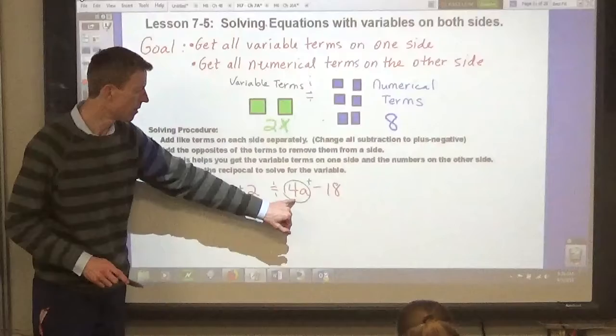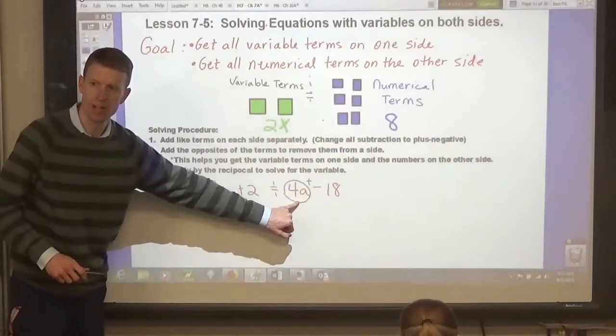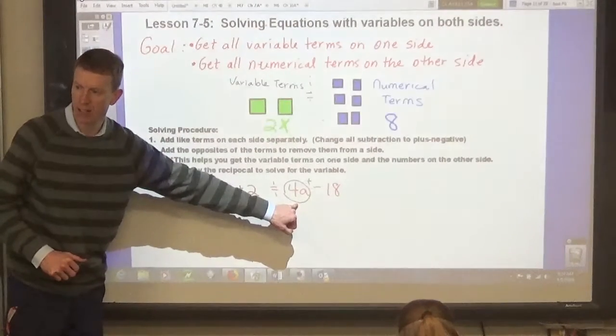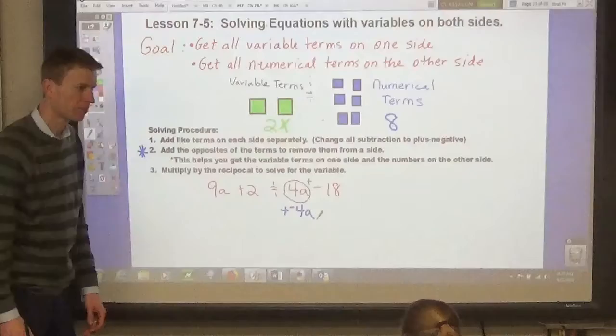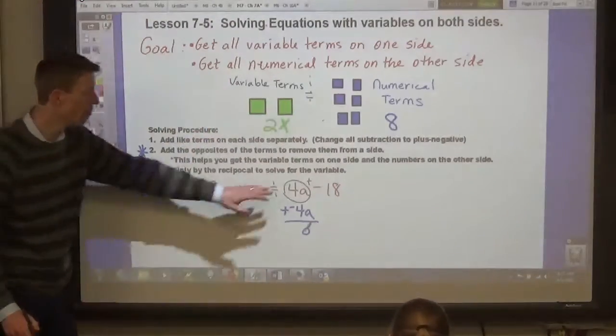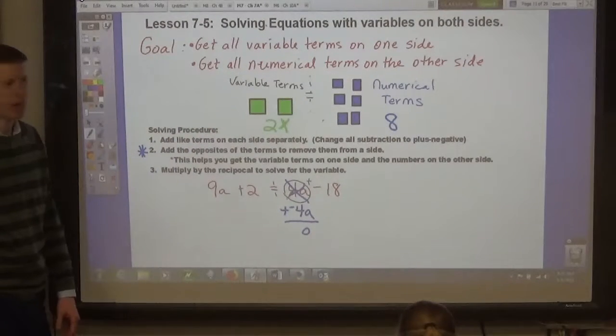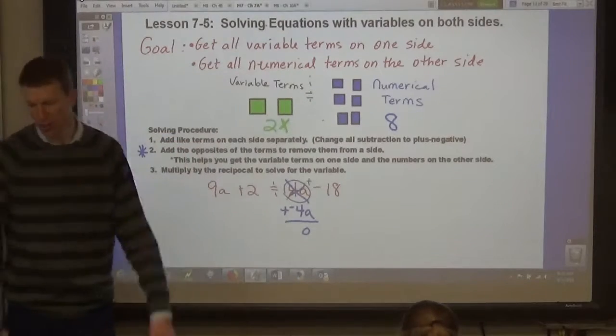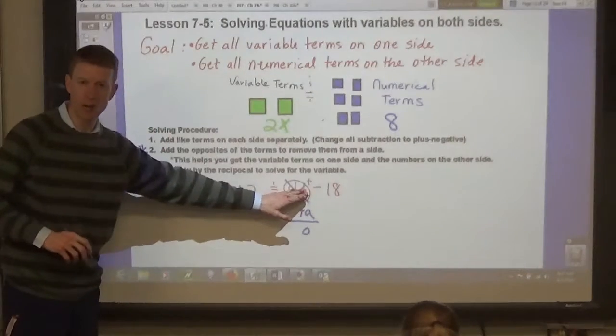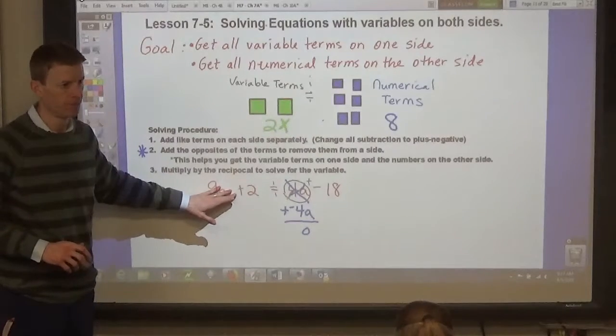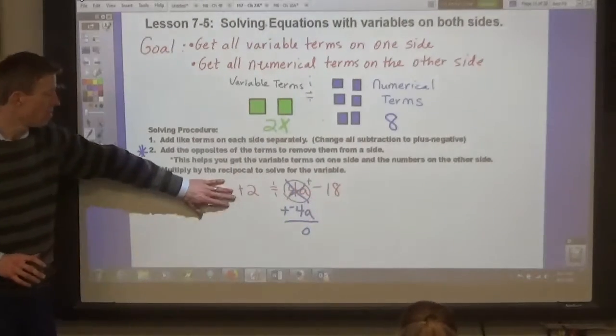If you have, in this case, we have 9a's on the left side, and we have 4a's on the right side. If you want to get rid of the 4a's on the right side, then you add negative 4a's. Because that equals zero. And now you've removed those 4a's from the right side. But, you also have to follow the cardinal rule of solving equations. The cardinal rule, the most important rule, is that whatever you do to one side of the equation, you have to do to the other side. In order for the equation to stay balanced. You can't just do something on one side and not do that on the other side.